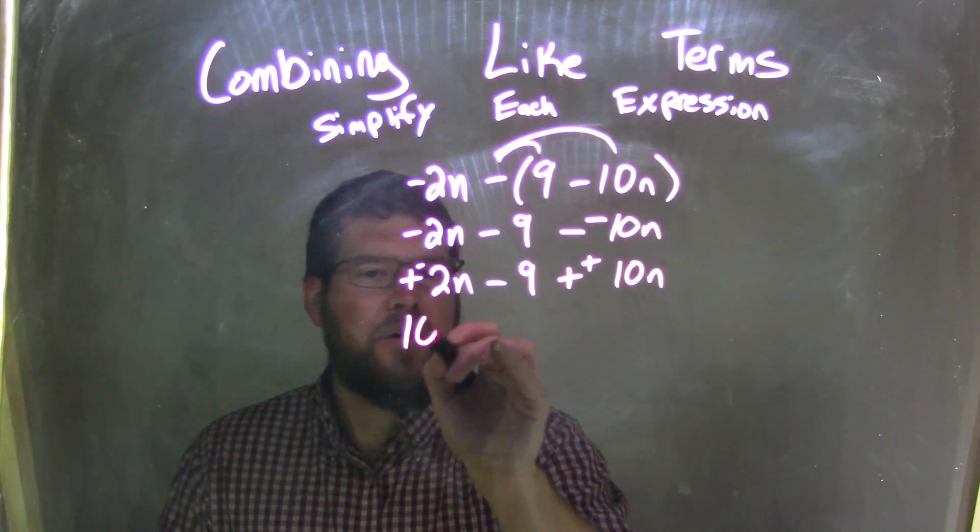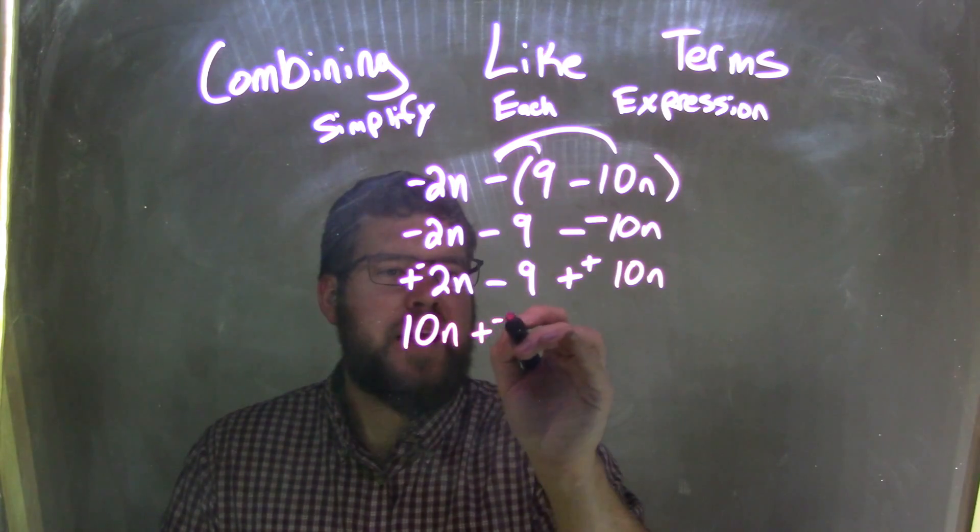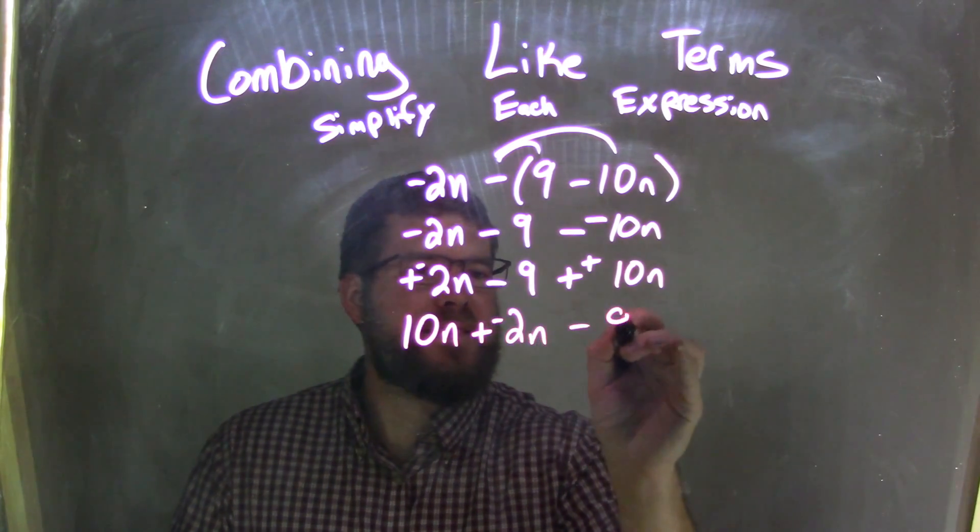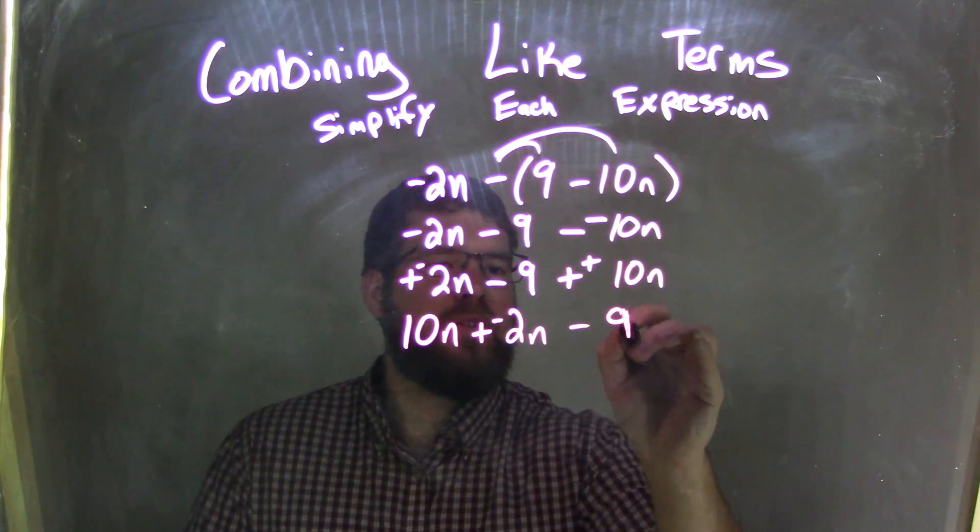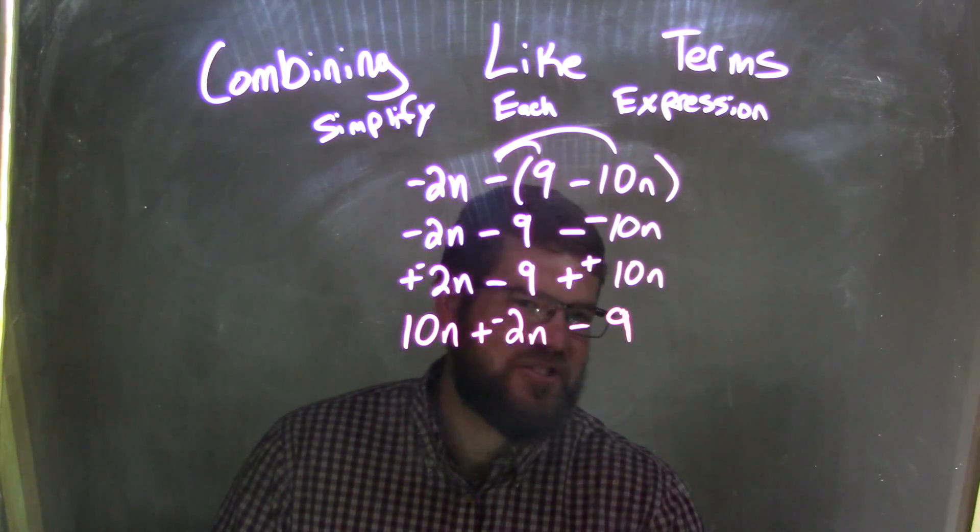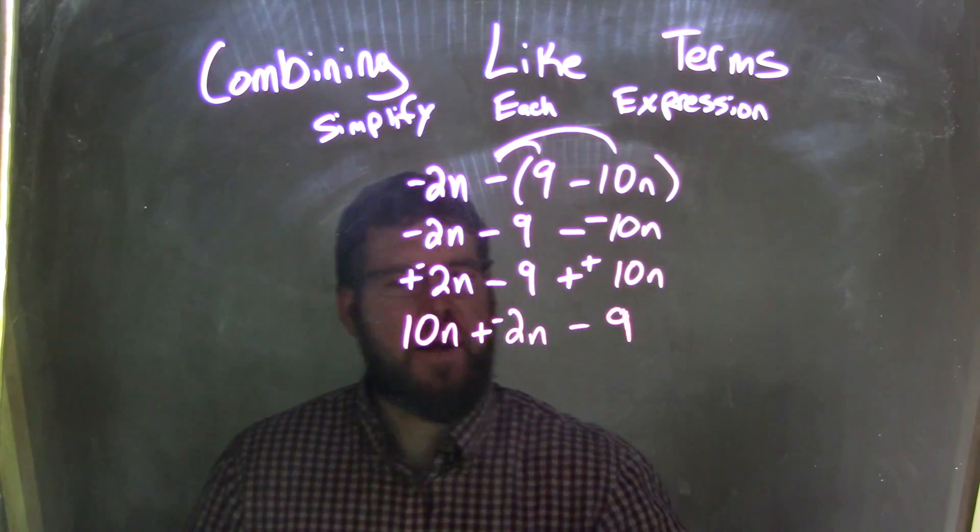So the 10n I'm going to write first, plus a negative 2n minus 9. So hopefully you can see that 10n plus a negative 2n is just 8n, but if you cannot, it's okay.